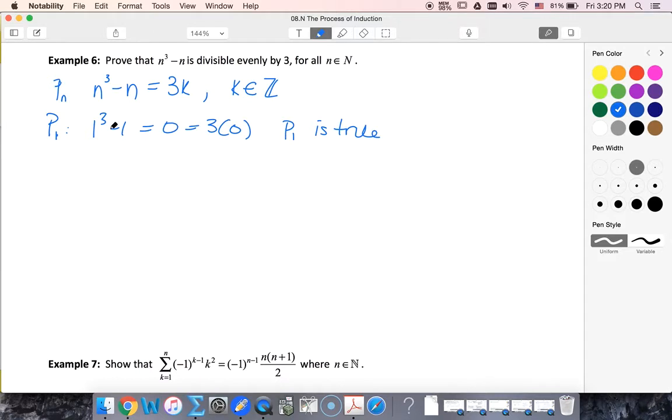And if we feel a little uncomfortable because it was 0, we could also test P sub 2 just to be sure. So 2³ - 2, that's equal to 6, which is 3 times 2. So P2 is also true, so it makes us feel a little bit better.